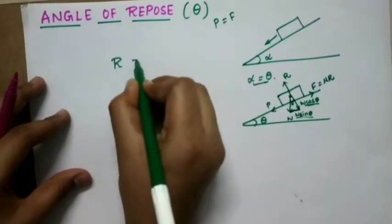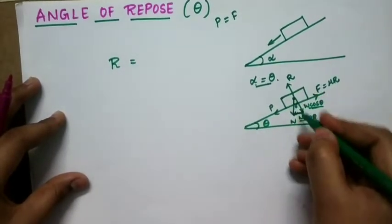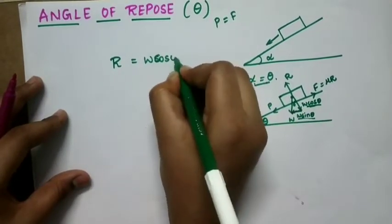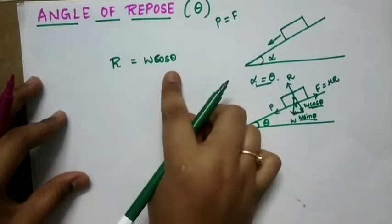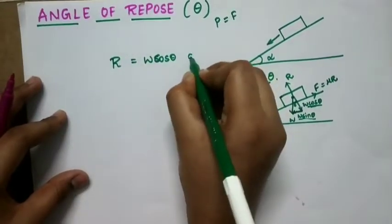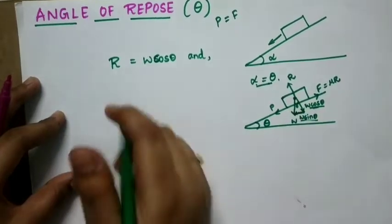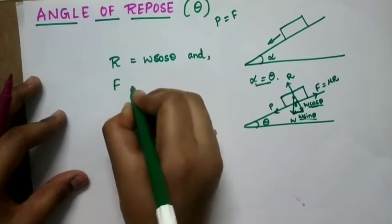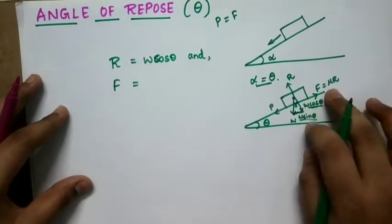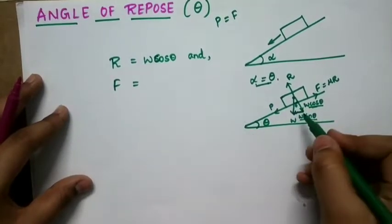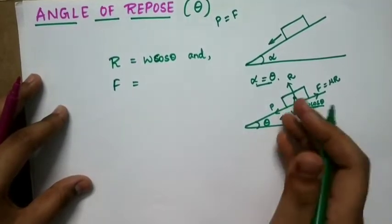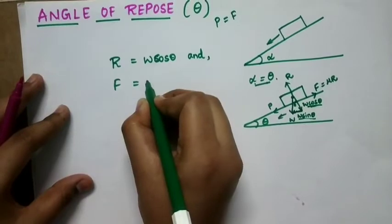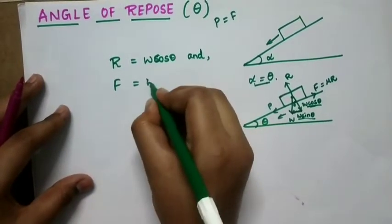Perpendicular to the plane: reaction force R is equal to W cos theta. For forces along the plane, frictional force F is equal to W sin theta in the E direction.